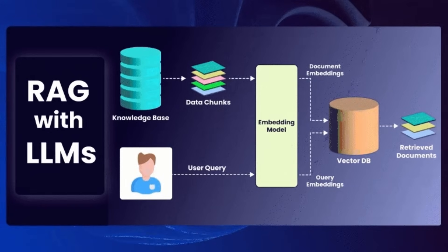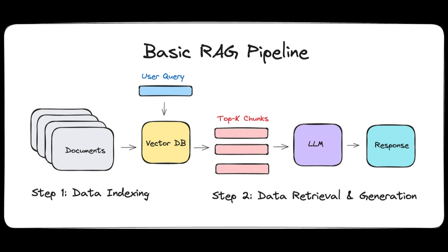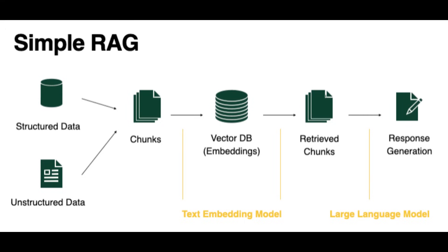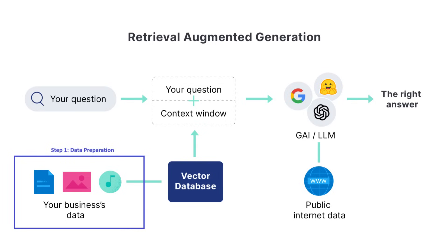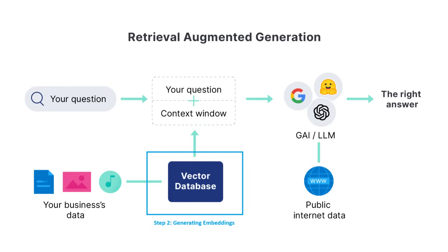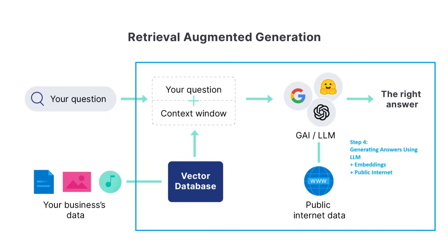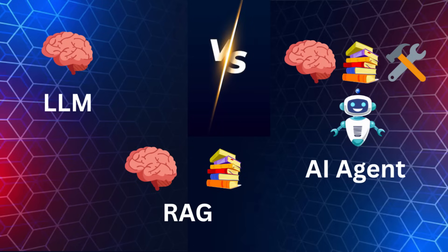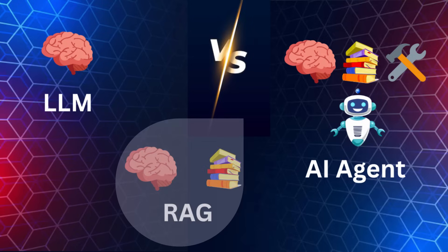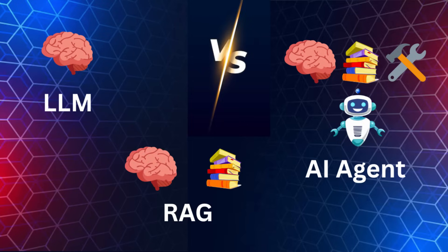Enter RAG — Retrieval Augmented Generation. Sounds fancy, but here's the simple idea: instead of asking the AI to rely only on its memory, we give it the latest, most relevant information before it answers. It works in two steps. Retrieval: pull relevant chunks of information from a knowledge source — could be a database, documents, or even the web. Augmented Generation: feed that information into the LLM so it can answer using up-to-date, accurate facts. Imagine you have a personal assistant who's super smart but hasn't read today's news. RAG is like handing them the news article before they answer your question. Now they can be both smart and current.